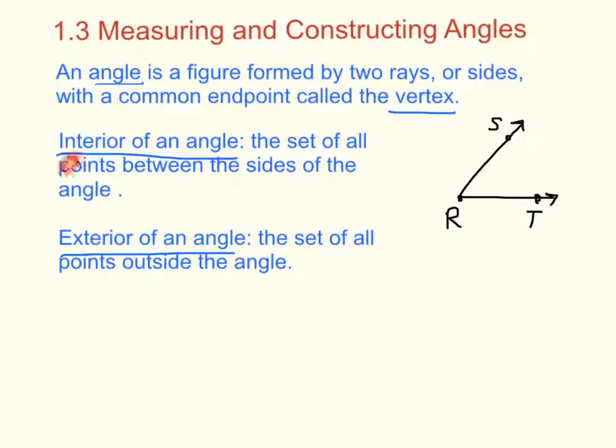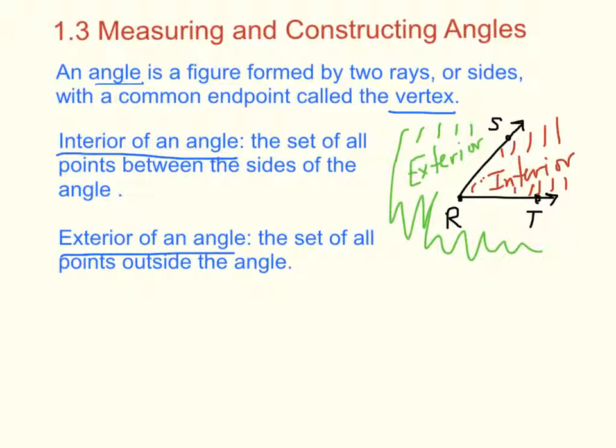Now the next two definitions are fairly easy and straightforward, but we still have to go over them. The interior of an angle is the set of all points between the sides of the angle, and the exterior is the set of all points outside the angle. So for example, this would be the interior of an angle, all of this. And the outside of the angle would be called the exterior. So this is all the exterior of the angle.